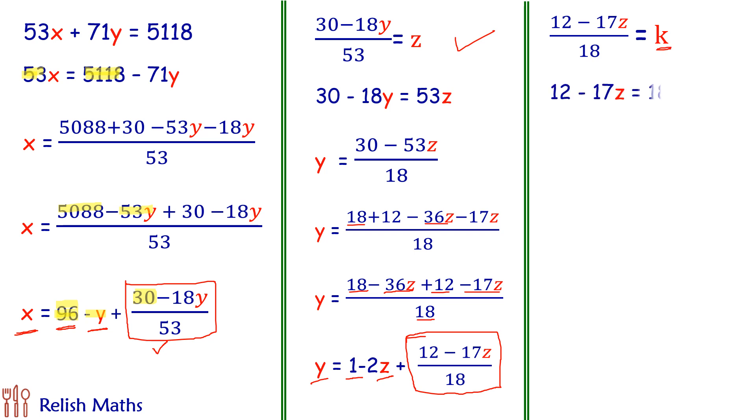Again, simplifying it. So z is coming as 12 minus 18k upon 17. 18k we have split as 17k minus k, so 17k by 17 gives me negative k and remaining is 12 minus k. So this is what I have simplified it.